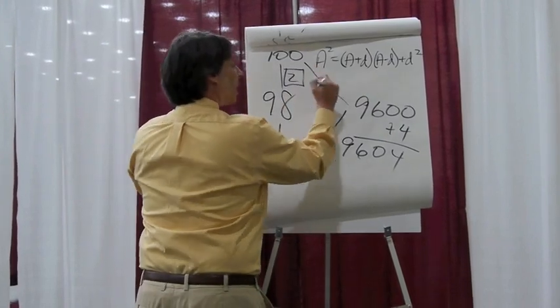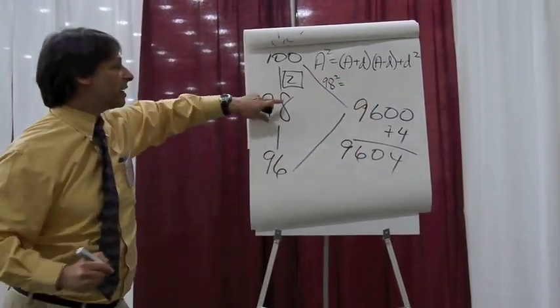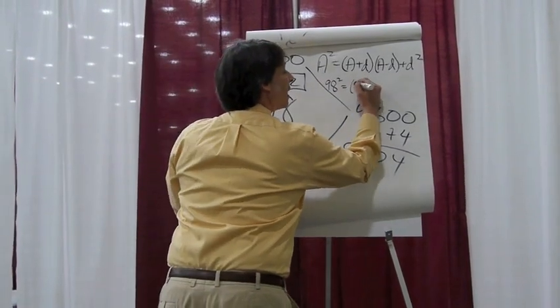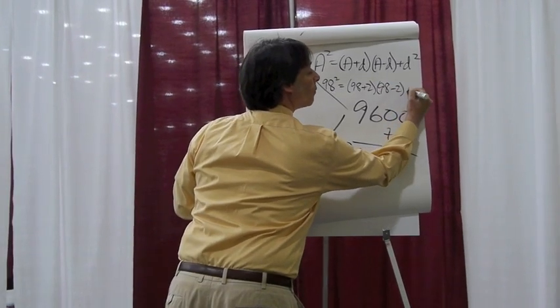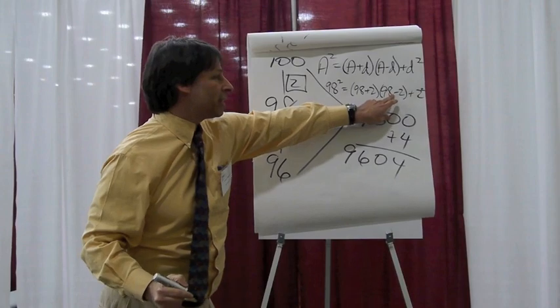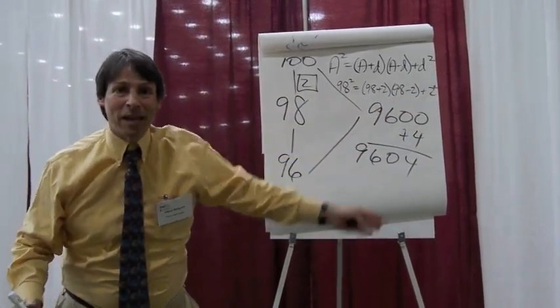For example, when I do 98 squared, d, the distance, is 2. And that says that 98 squared is 98 plus 2 times 98 minus 2 plus 2 squared. That's 100 times 96 plus 4, which is exactly what we have here.